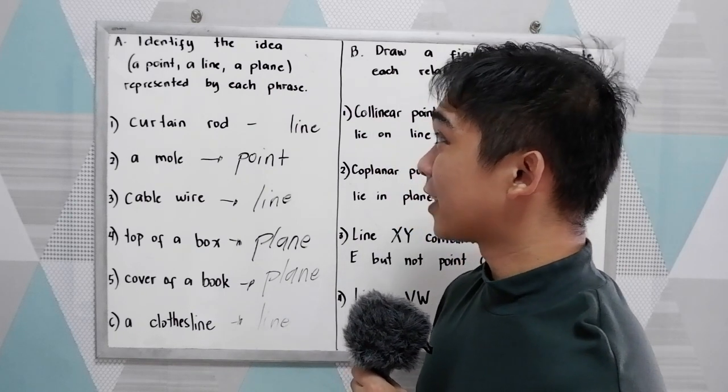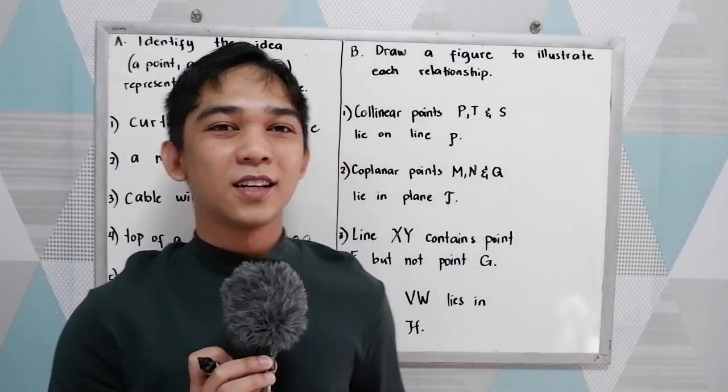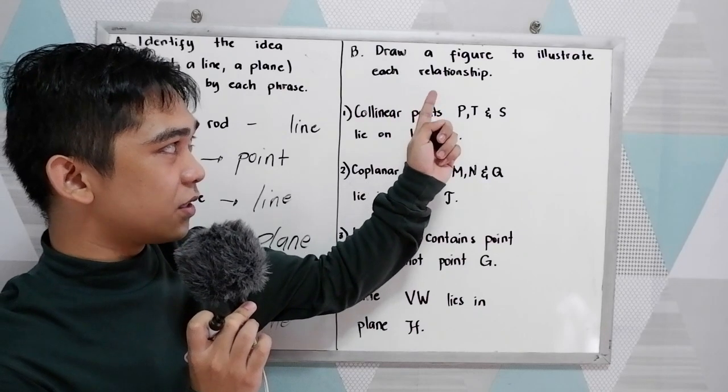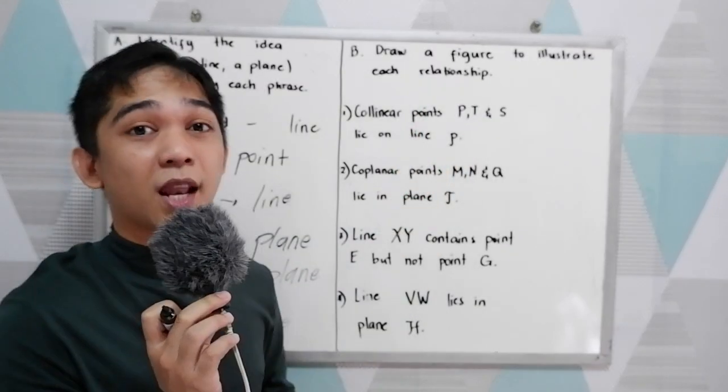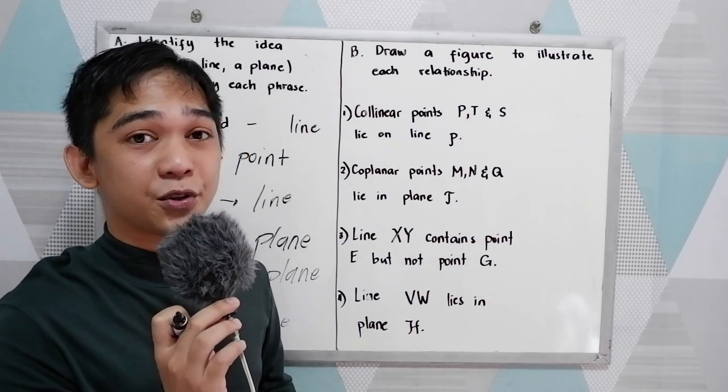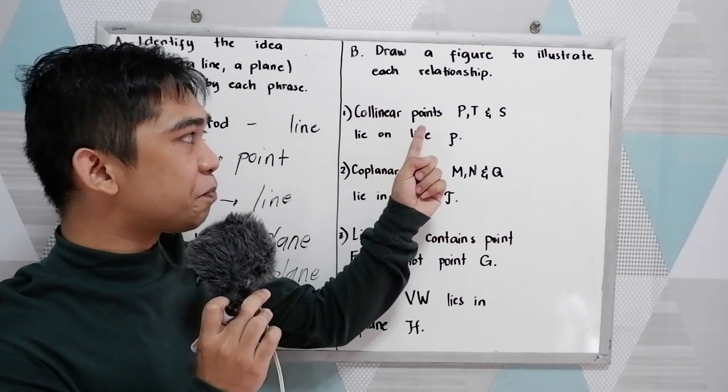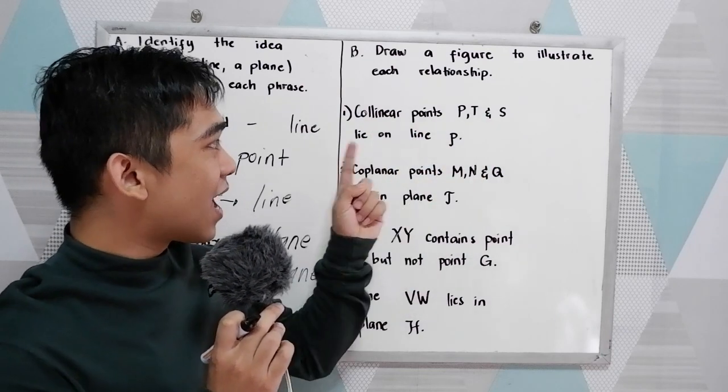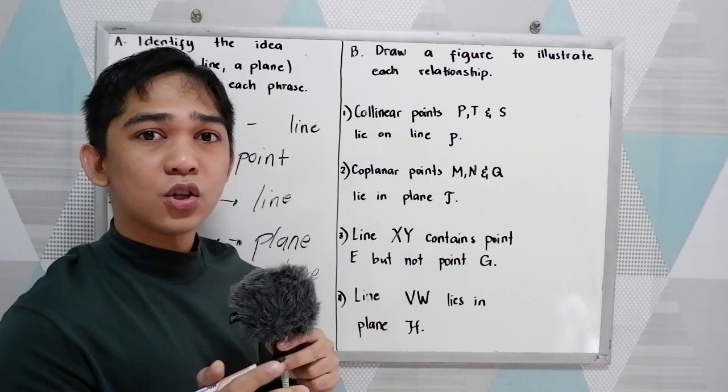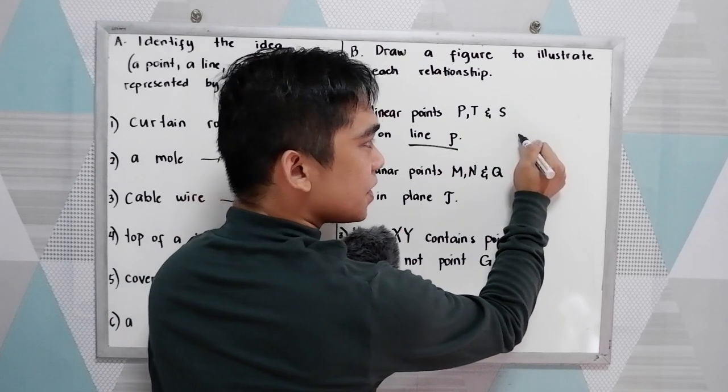Okay, we're done in letter A. Now let us proceed in letter B. Direction, draw a figure to illustrate each relationship. This time we're going to draw a figure. Number one, collinear points P, T, and S lie on line P. So we have a line P. So we're going to draw a line P.